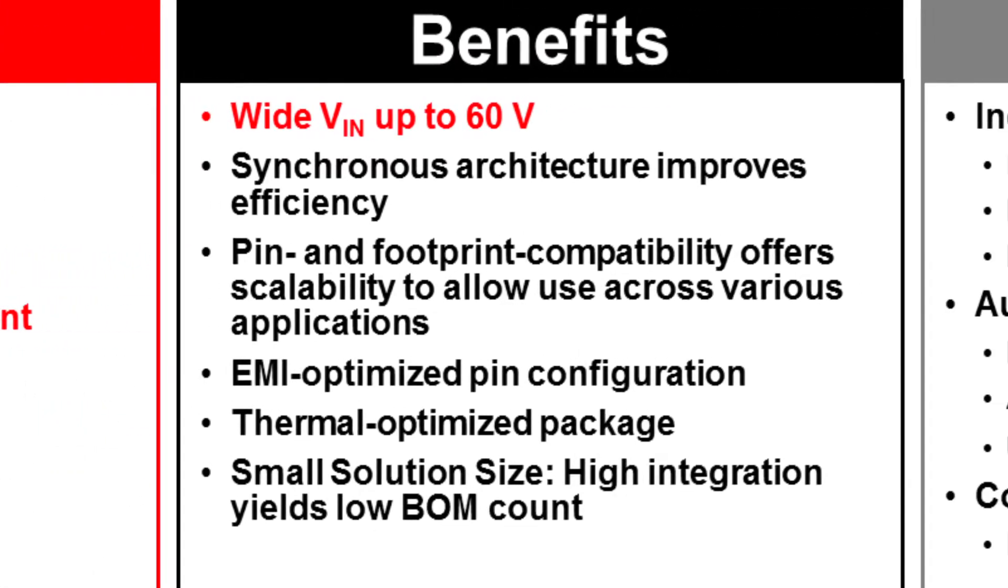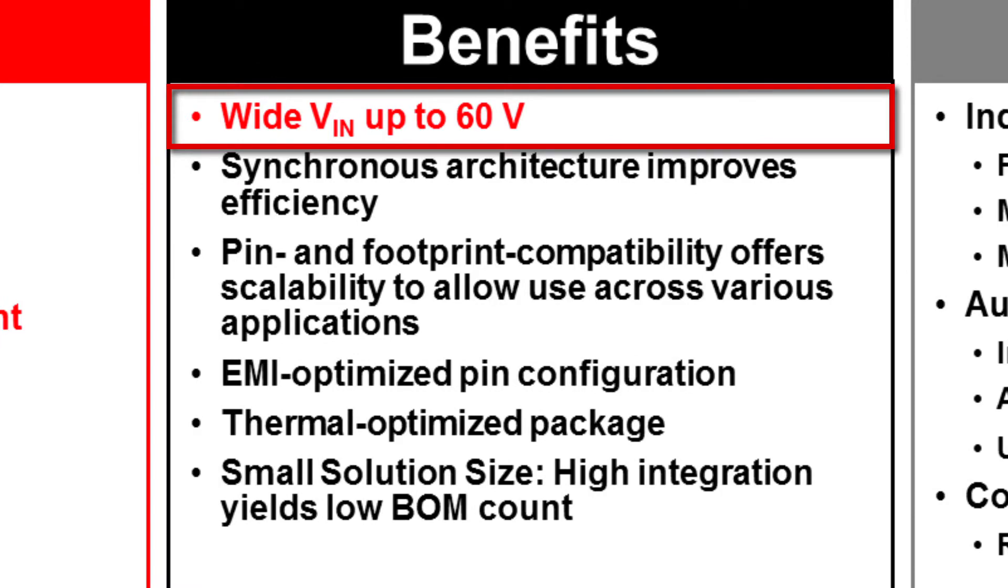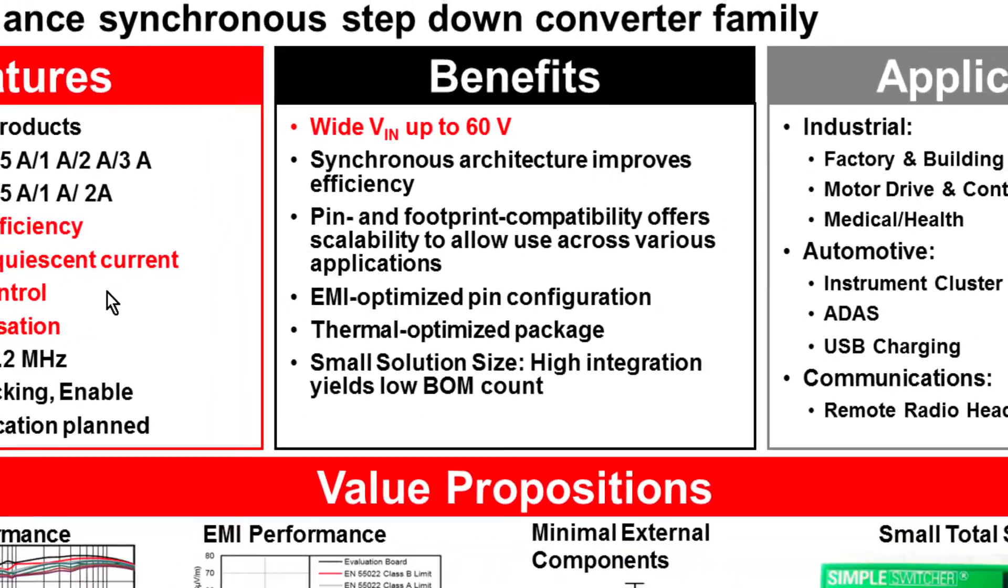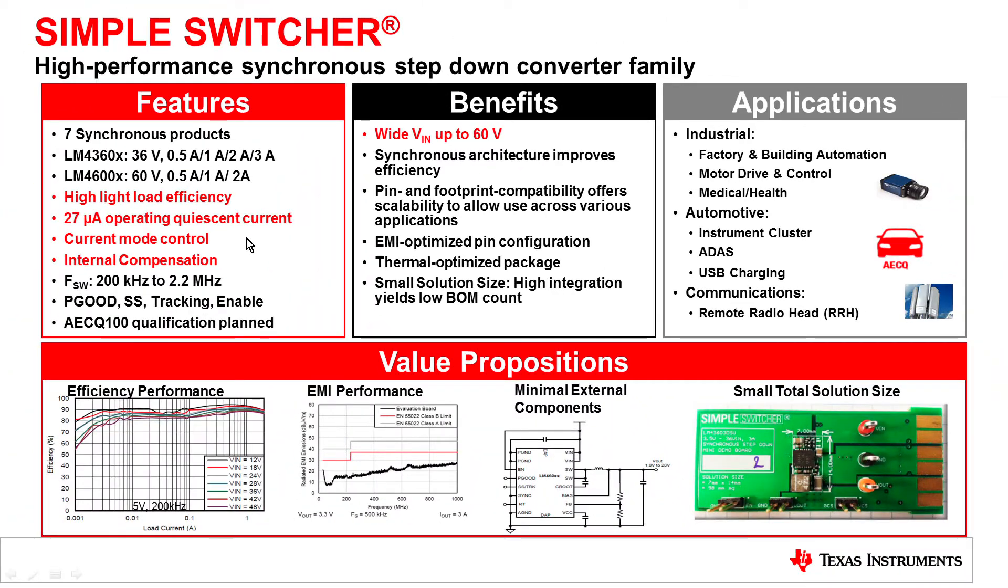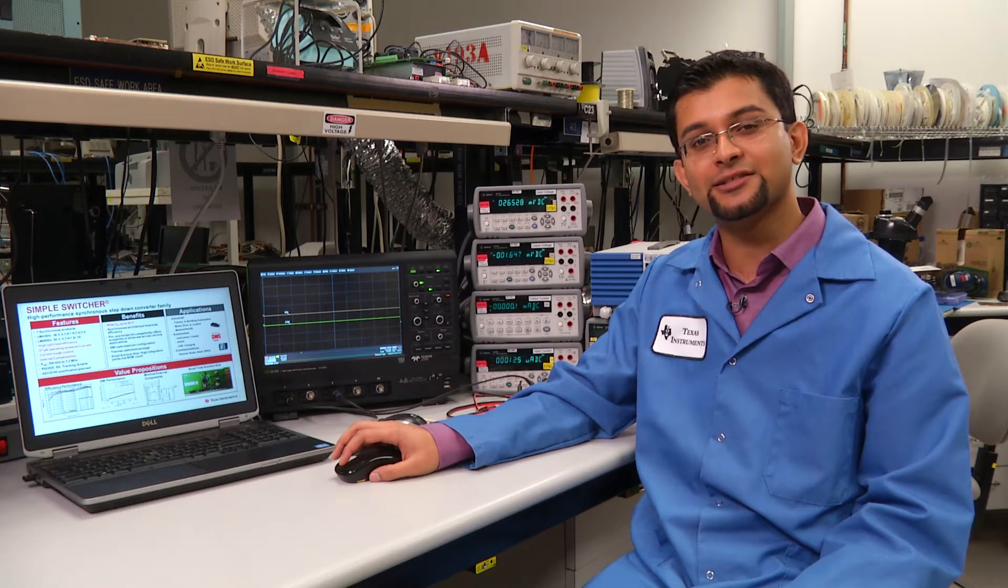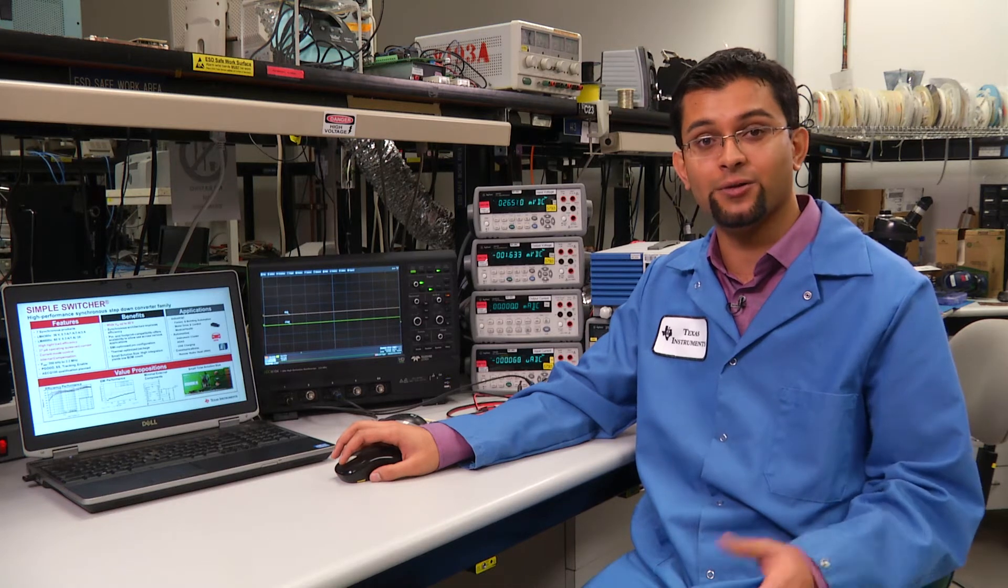Furthermore, this family of parts can go all the way up to 60 volts in a fully synchronous design, which means you can see efficiencies of up to 95%. Now let's take a look at some places that we would require an inverting rail.